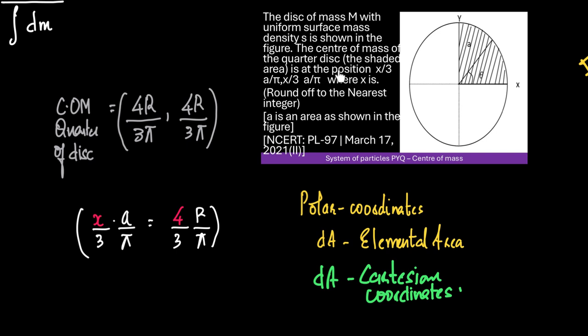It says that the center of mass of the quarter disc, the shaded area, is x by 3 times a by π. It's x by 3 times a by π.